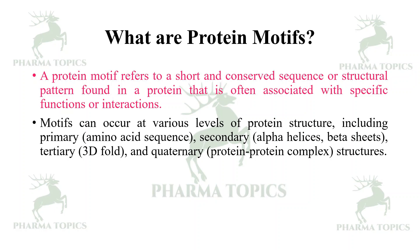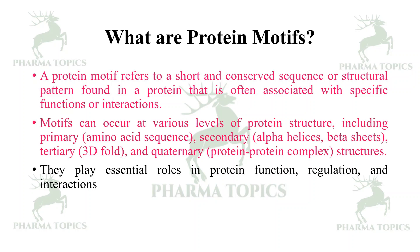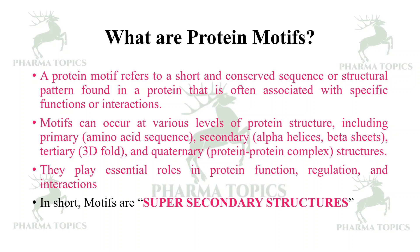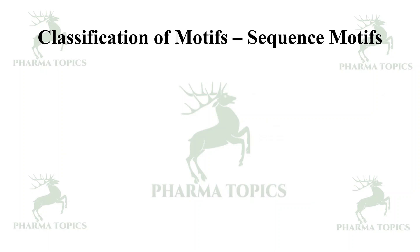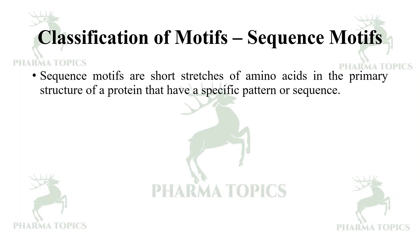Motifs can occur at various levels of protein structure including primary, secondary (that is alpha helices, beta sheets), tertiary (3D fold), and quaternary structures (regulation and interactions). In short, motifs are super secondary structures.